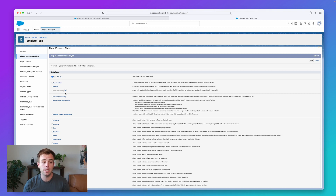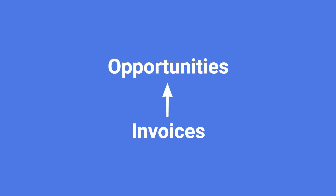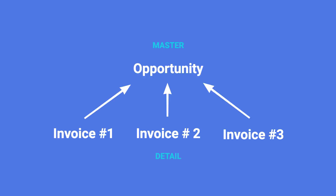A roll-up summary field lets you summarize a field value from the detail records, or the child records. For example, let's say we want to add the ability to associate invoices with opportunities. We create a custom object called invoice and relate it to an opportunity — we could do this through a lookup relationship, or through a master-detail relationship. If we choose master-detail, that means every invoice we create has to be related to an opportunity. That's probably fine, because we're only going to be invoicing for deals we've sold. We can then add a roll-up summary field that counts the number of invoices associated with the opportunity, or sums the amount of money that's been invoiced.